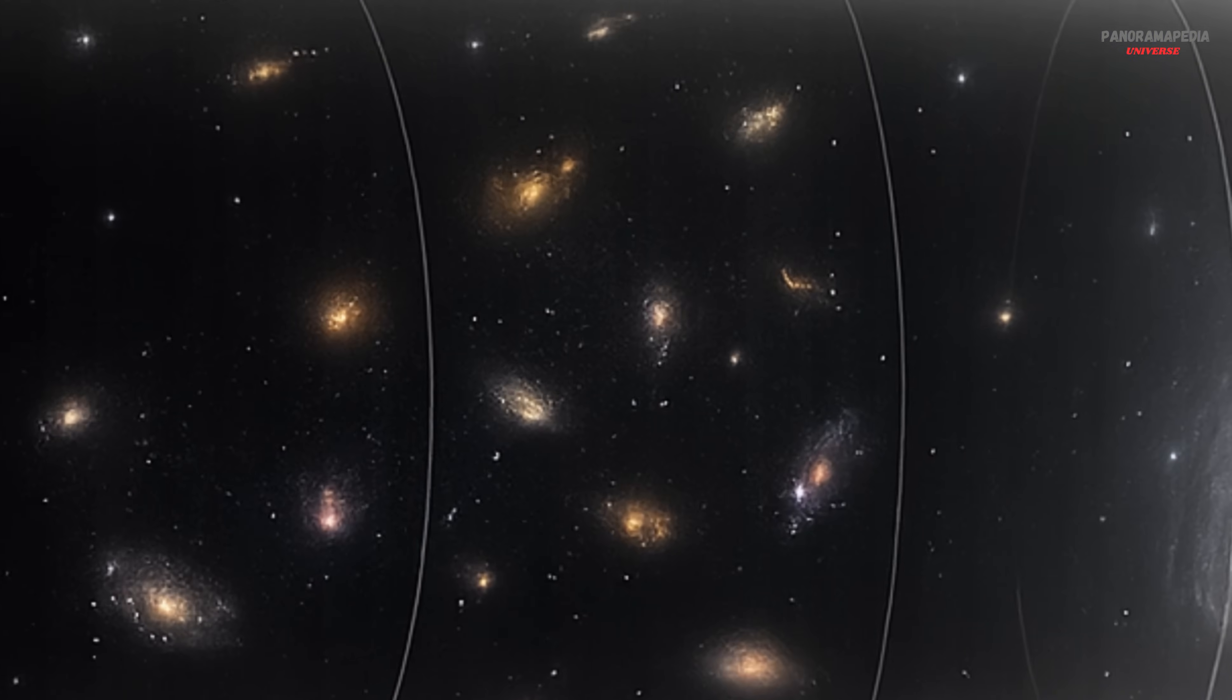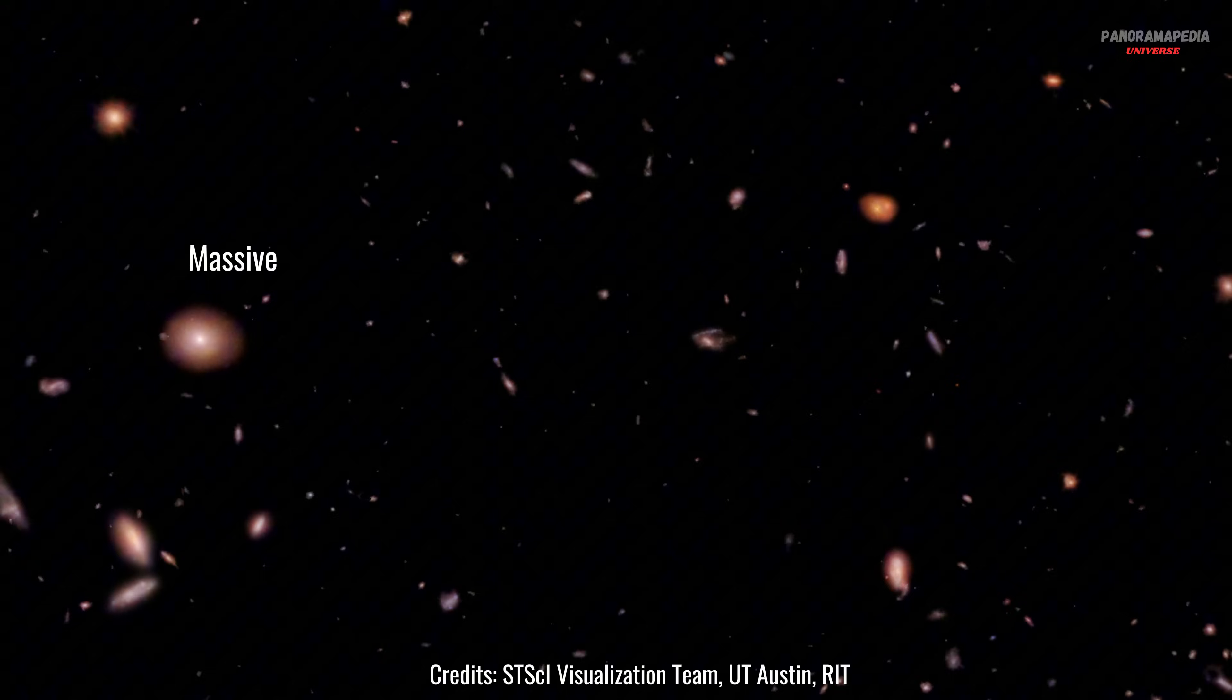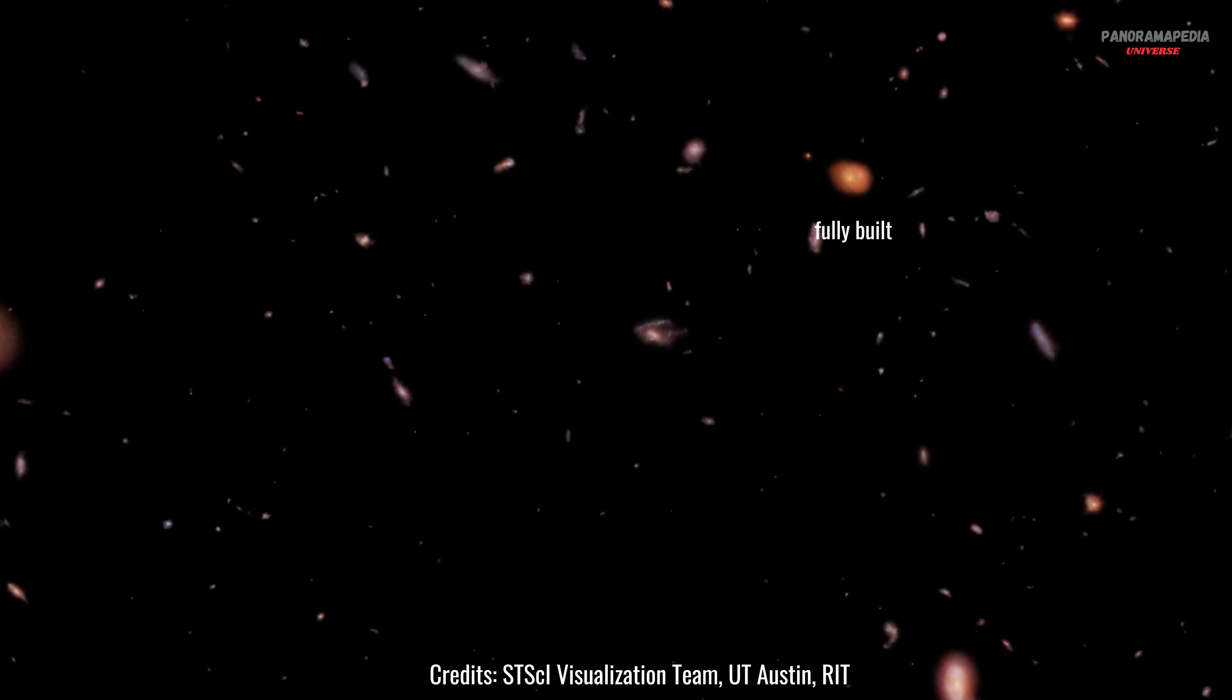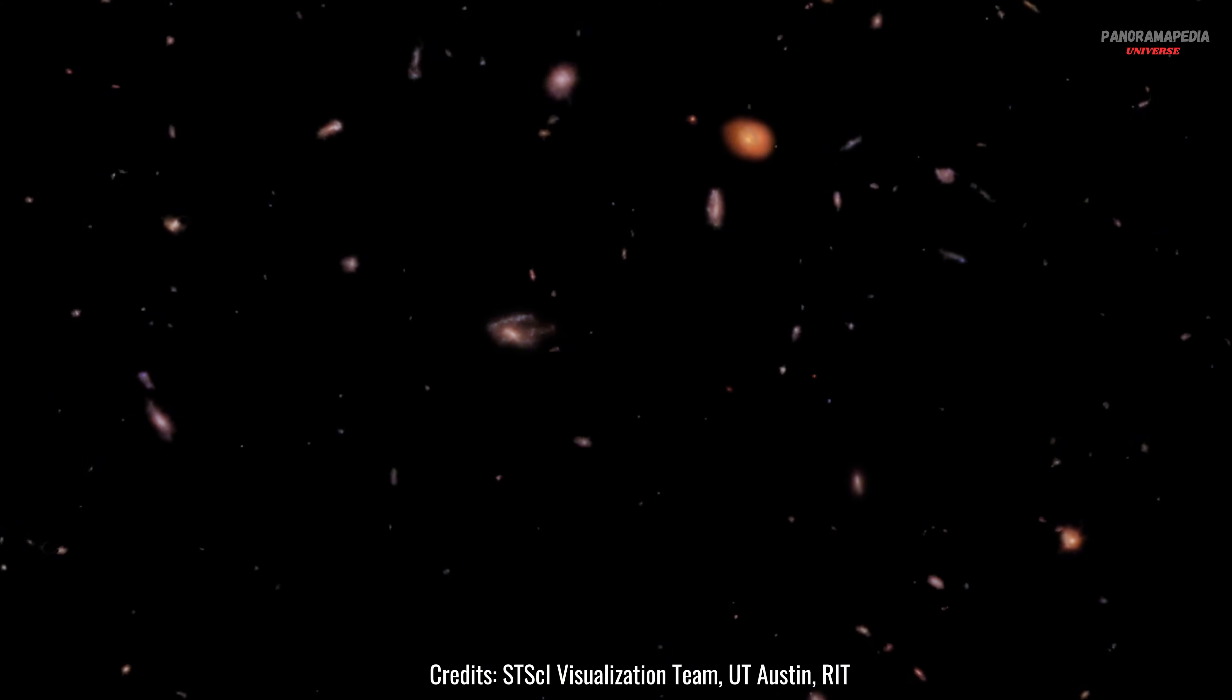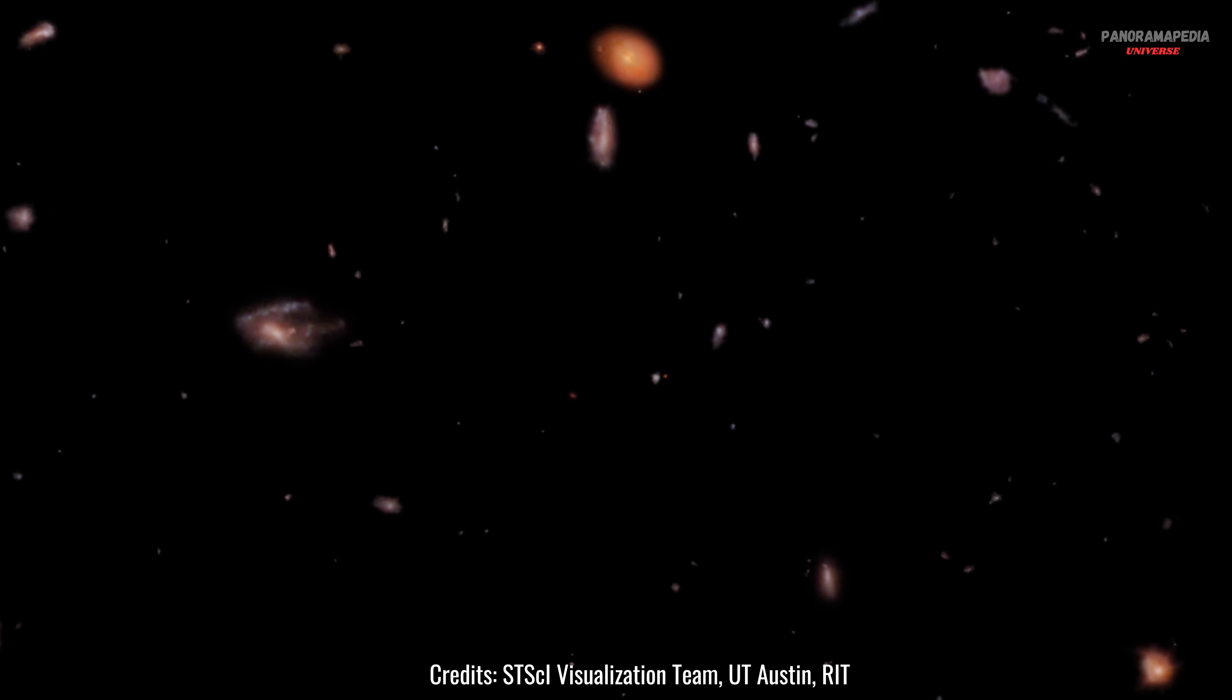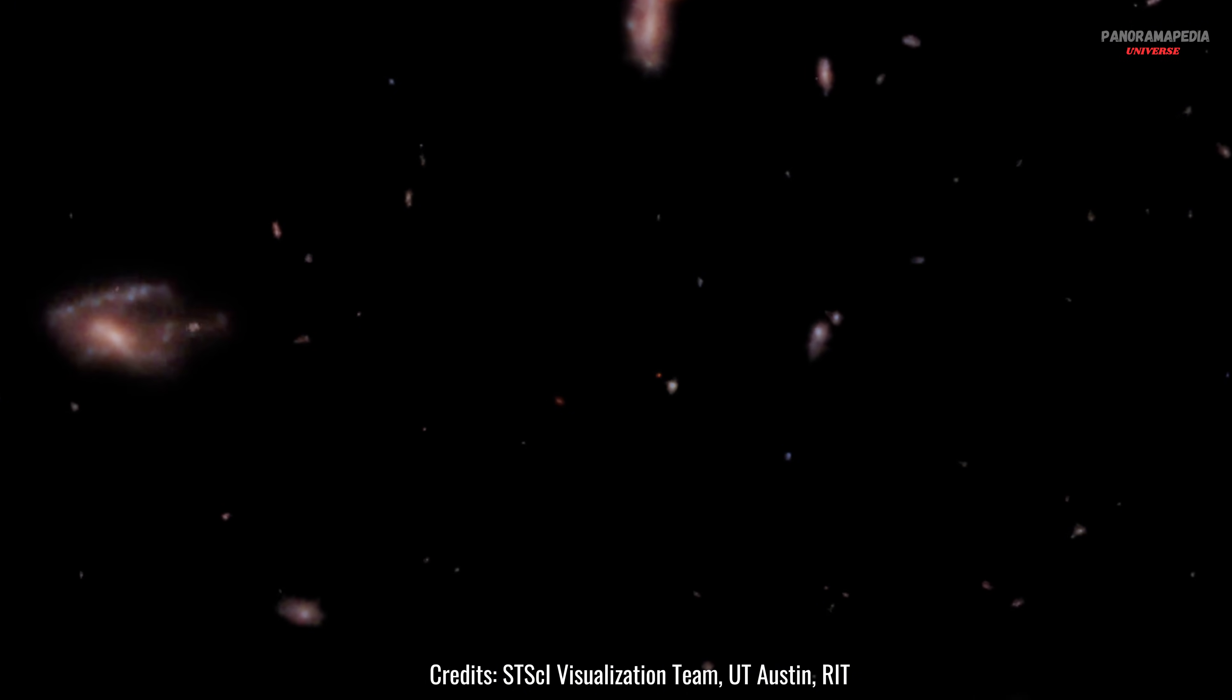But what Webb saw looked nothing like that. These galaxies were structured, massive, already filled with stars. It's like expecting a village of tents and finding a fully built skyscraper city instead.